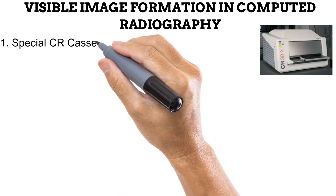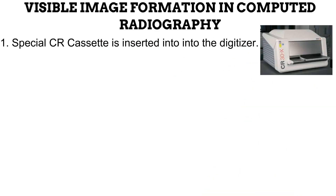Now that the phabzentrant centers house the latent image, let us look at how a visible image is made out of it. After the radiographer has acquired the latent image with the special cassette, he or she takes the cassette to the digitizer for a process known as readout. The first step in visible image formation in computed radiography is the insertion of the cassette into the digitizer. From this point, everything happens within the digitizer; the process cannot be seen by the radiographer. The closest clue is the sounds made by the digitizer during the process.